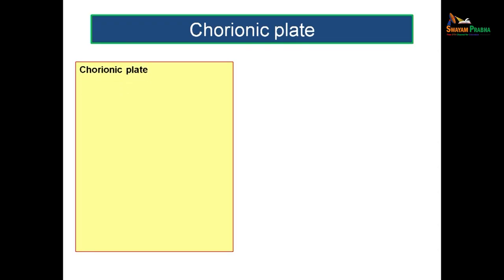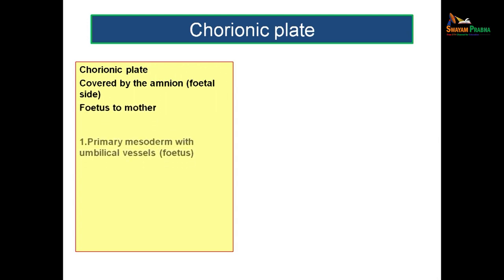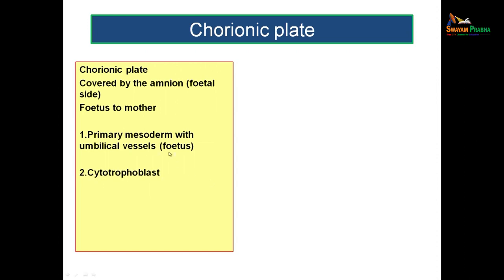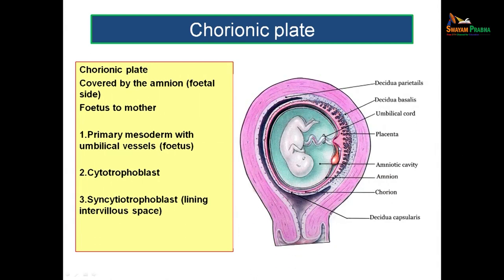Let us see each part of the placenta in detail. The chorionic plate is on the fetal side and is covered by amnion. Tracing the chorionic plate from fetus to mother, you first encounter the primary mesoderm with the umbilical vessels, then the cytotrophoblast layer, and then the syncytiotrophoblast layer lining the intervillus spaces.